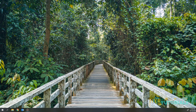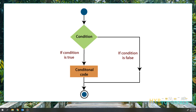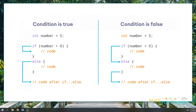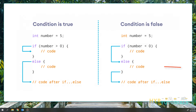In if and if-else statements, we verify the condition and based on the condition output we execute the code. Every condition has two types of output: either true or false. If the condition is evaluated to true then we execute the code inside the if block, and if it is evaluated to false then we execute the code inside the else block.